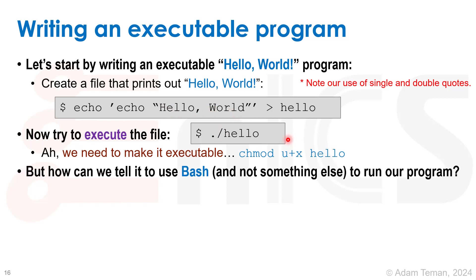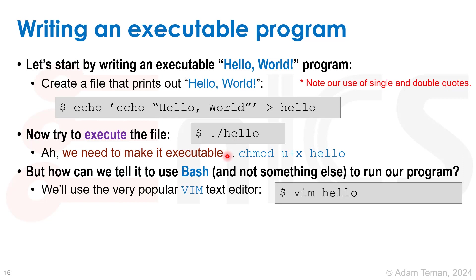But how do we actually tell it to use bash and not something else to run our program? One way is to write source hello. If we run source, it doesn't need to be executable. It will go line by line and pass it to the interpreter, which is right now the bash shell. But we can explicitly tell it to run bash when we do something like dot slash hello, and the way to do it is to add what we call a shebang.